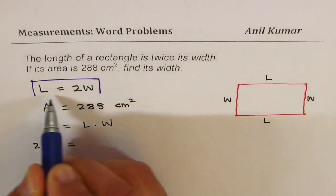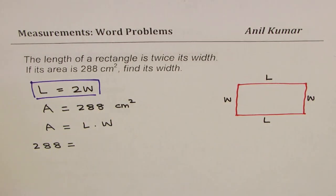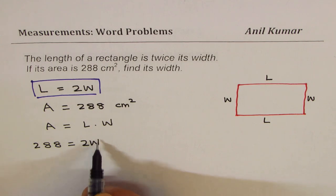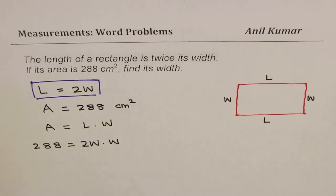this length with two times width. Two times width, and we already have times width here, correct? So I have done this substitution with 2W for length.